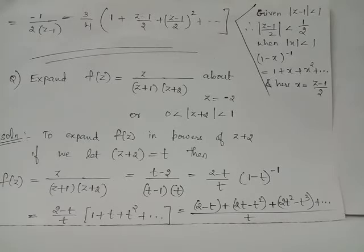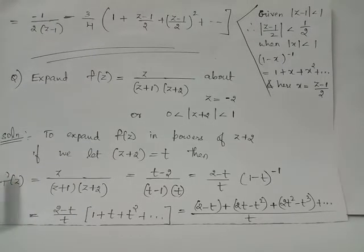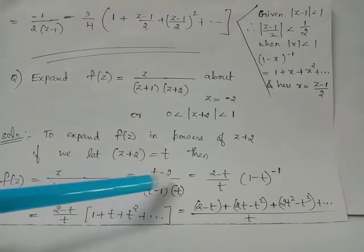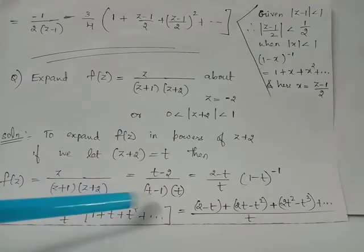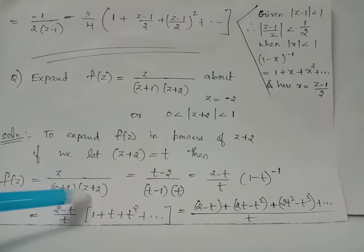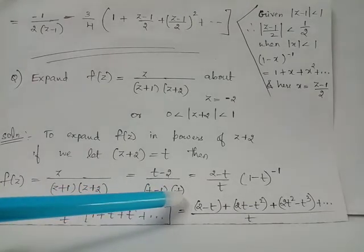We wish to expand the given function f of z in powers of z plus 2. Substituting z plus 2 equals t, we have z equals t minus 2 in the numerator. With z equals t minus 2, z plus 1 becomes t minus 1, and z plus 2 is t itself.